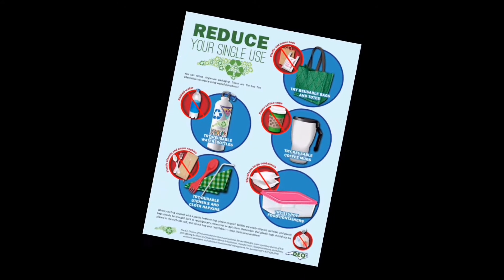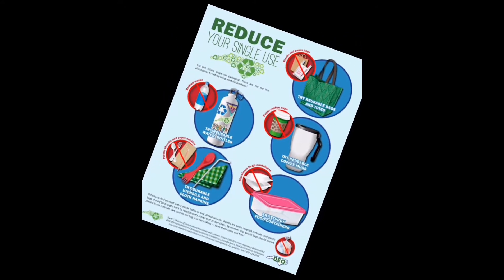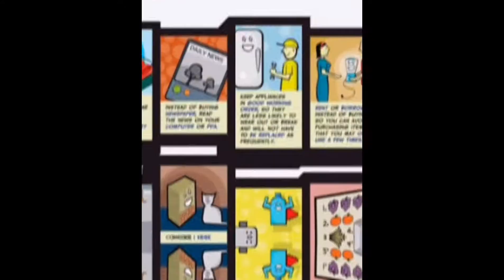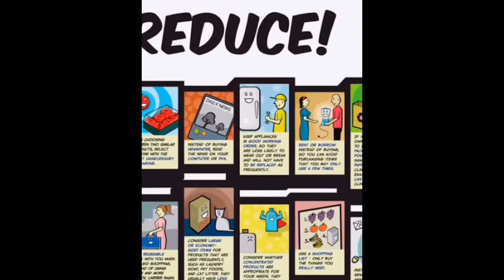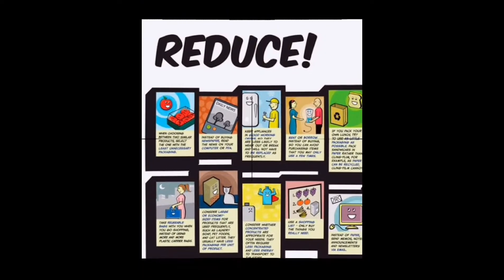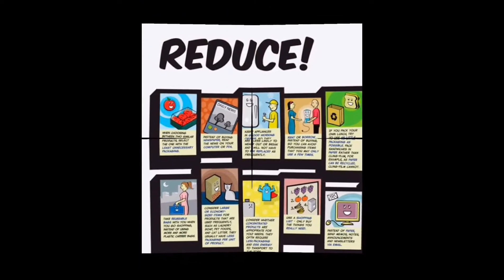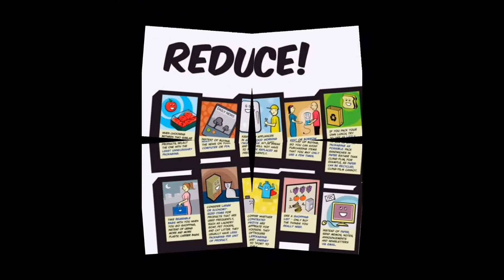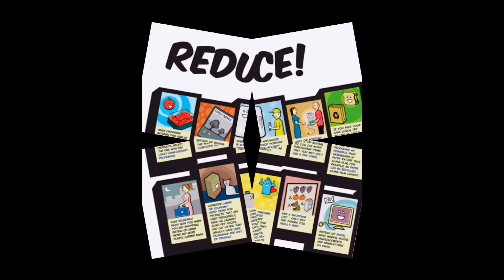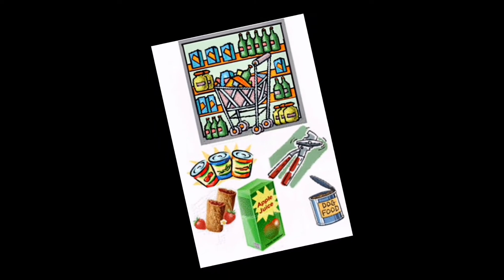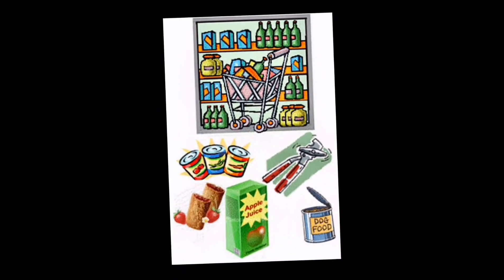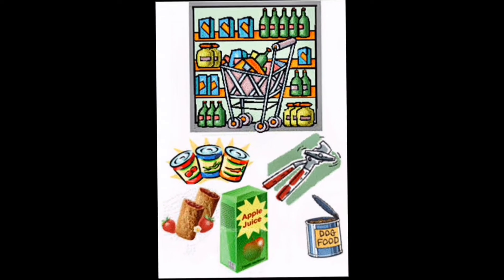Tulad ng plastics, diaper, paper napkins, at disposable plates, spoons, glass, and cups. Kailangan natin iwasan ito at gumamit ng mga products na eco-friendly.